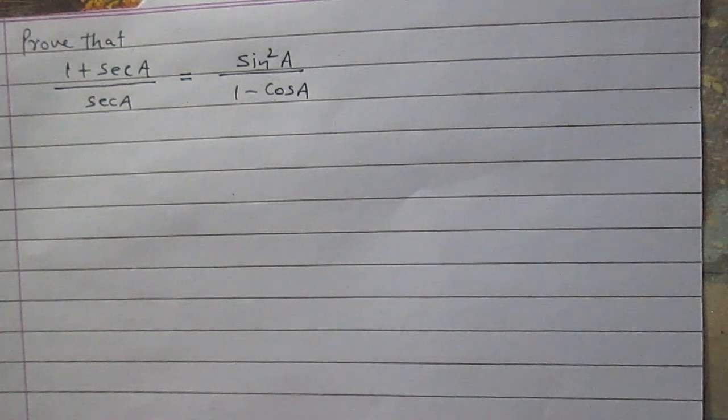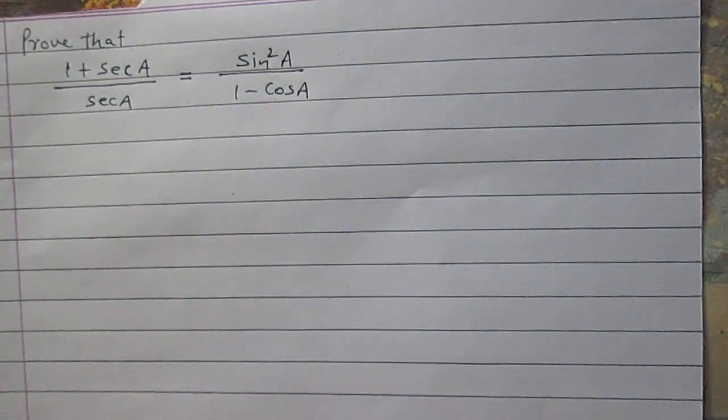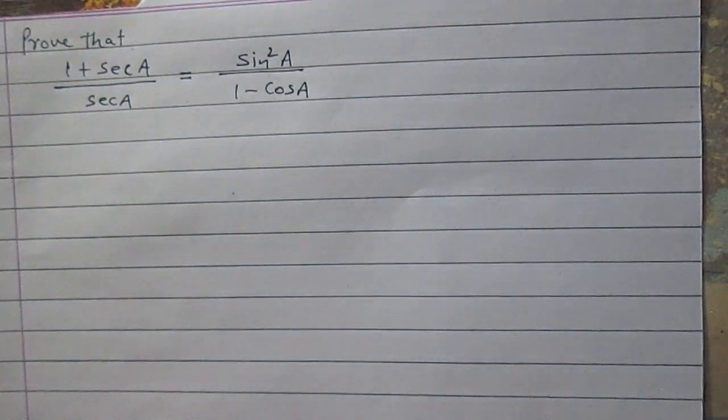Prove that (1 + sec a) divided by sec a is equal to sin squared a upon (1 minus cos a).